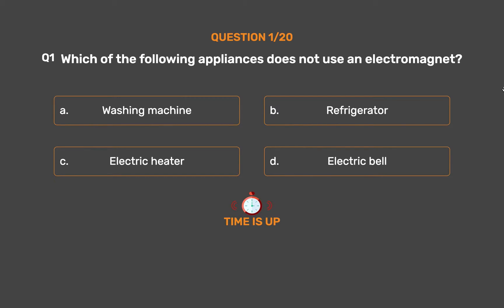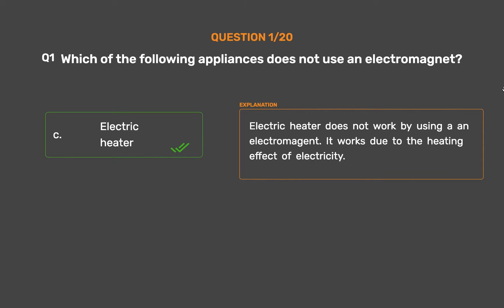The correct answer is Option C: Electric heater. Electric heater does not work by using an electromagnet. It works due to the heating effect of electricity.